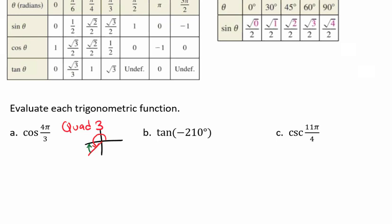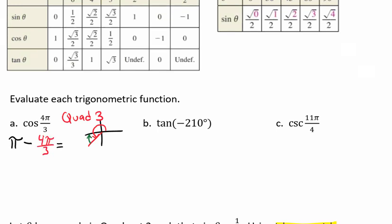Notice that this is in quadrant 3, in our tangent quadrant. We're going to take pi because that is our closest horizontal axis. Pi minus 4π over 3 tells us that we're going to have a reference angle of π over 3.